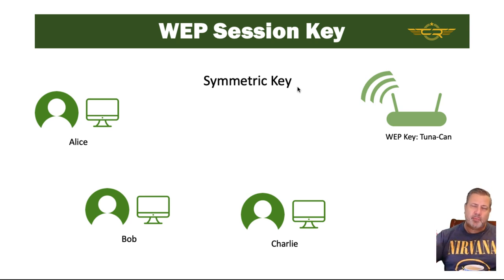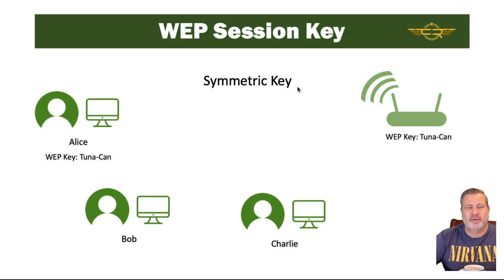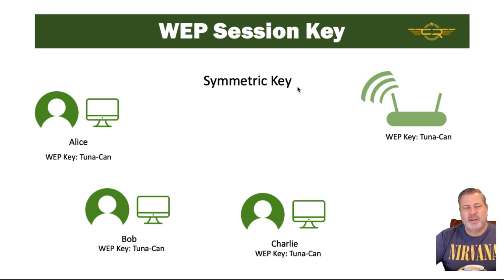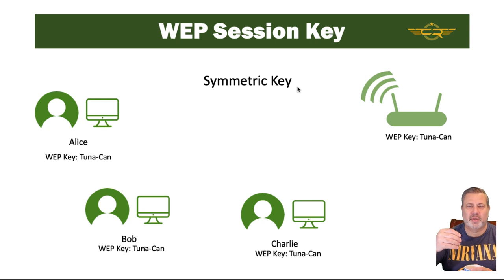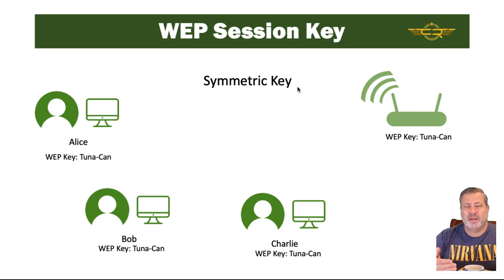With a symmetric key, the session key everyone used to connect to the network was shared. If the access point's WEP key is 'Tunican,' then Alice, Bob, and Charlie all used that same WEP key. If you had 100 users and one left, you'd have to change that session key on everyone's computer and the access point. Everyone using the same key made it more vulnerable.